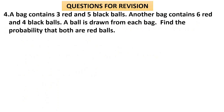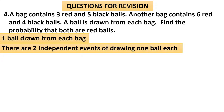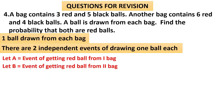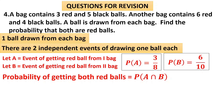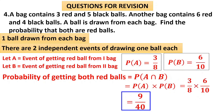Question 4: A bag contains three red and five black balls. Another bag contains six red and four black balls. A ball is drawn from each bag. Find the probability that both are red balls. One ball drawn from each bag gives two independent events. A is the event of getting a red ball from the first bag — P of A = 3/8, since there are three red and five black balls totaling eight. B is the event of getting a red ball from the second bag — P of B = 6/10, since there are six red and four black totaling ten. P of A intersection B = P of A into P of B = 3/8 into 6/10. The answer is 9/40.